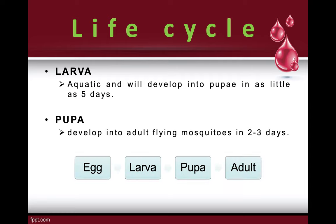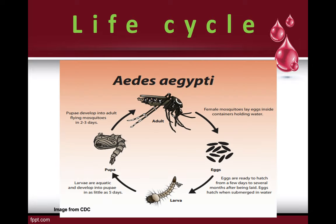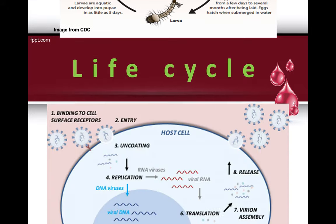To recap the life cycle: only the female mosquito lays eggs; eggs hatch into larvae, then develop into pupae, and then into adult mosquitoes carrying the dengue virus. The female mosquito lays eggs, which hatch to larvae, develop into pupae, and in two to three days become adults that spread and feed on blood.